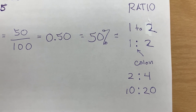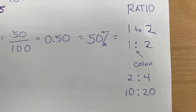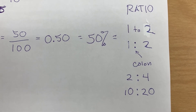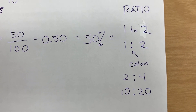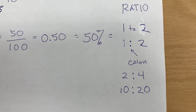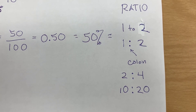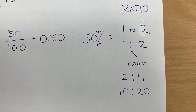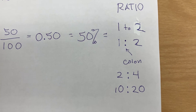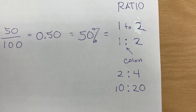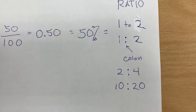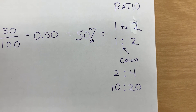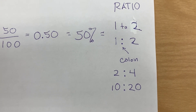Another way of writing a ratio can be an equivalent ratio. So I multiply one by two and two by two to get 2:4. If I multiply the one by 10 and also the two by 10, I get 10 to 20. So that's what our ratio is.